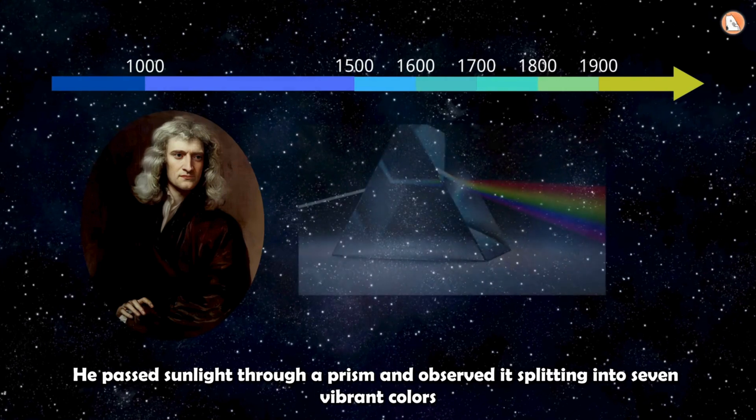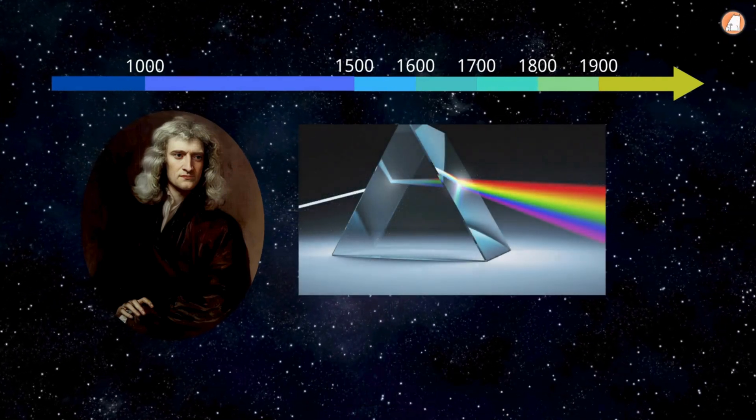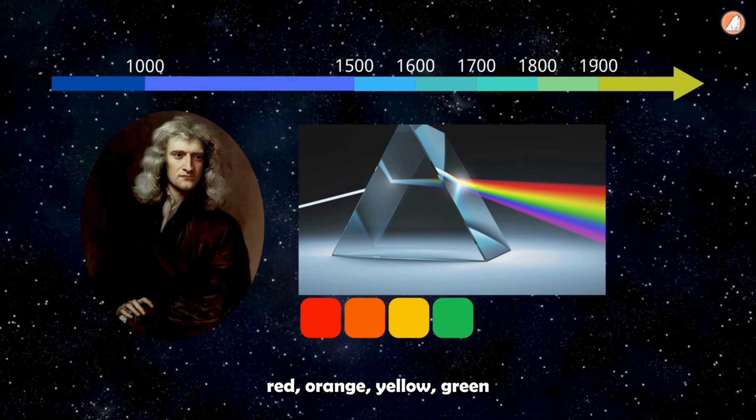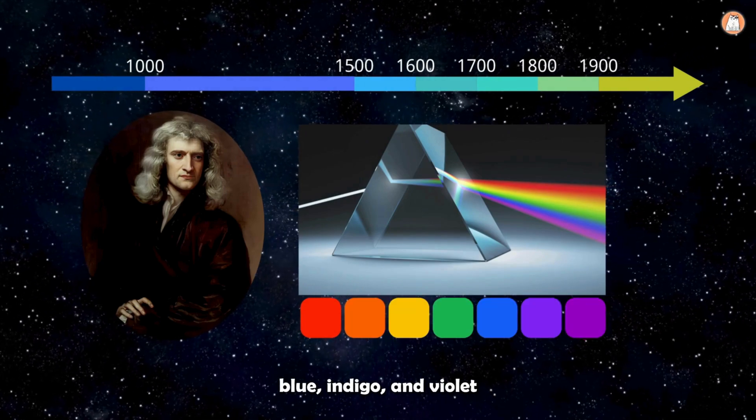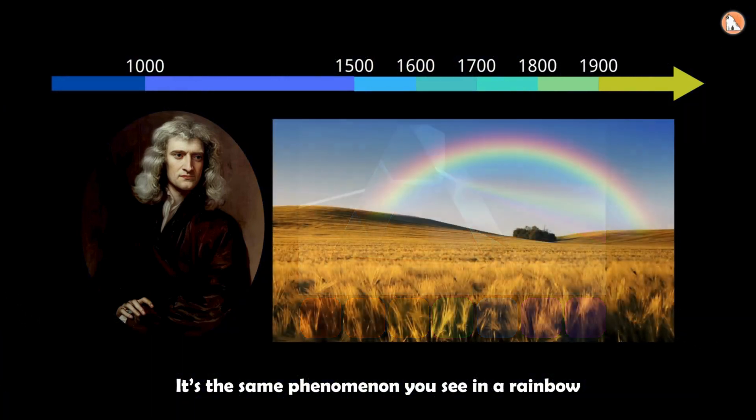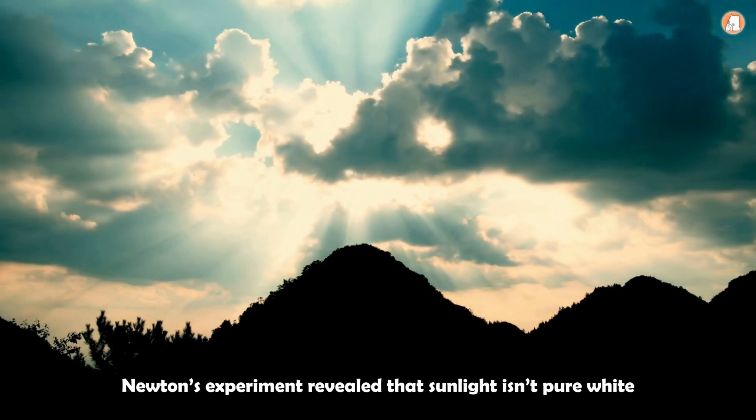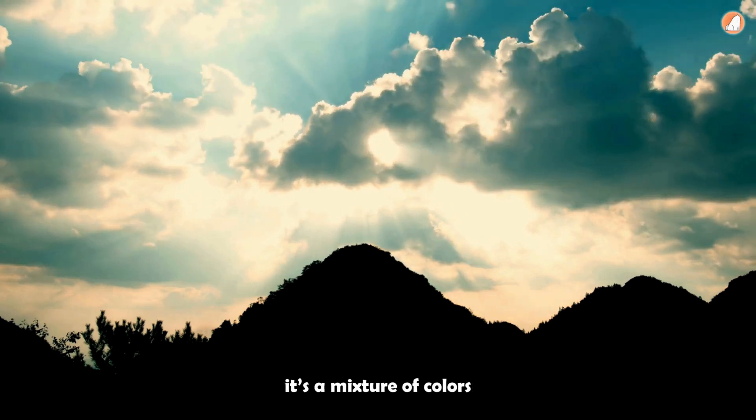He passed sunlight through a prism and observed it splitting into seven vibrant colors: red, orange, yellow, green, blue, indigo, and violet. Sound familiar? It's the same phenomenon you see in a rainbow. Newton's experiment revealed that sunlight isn't pure white. It's a mixture of colors.